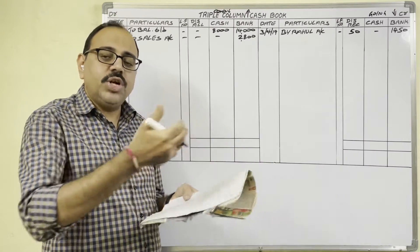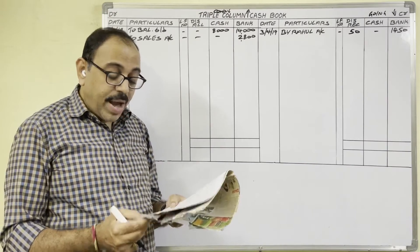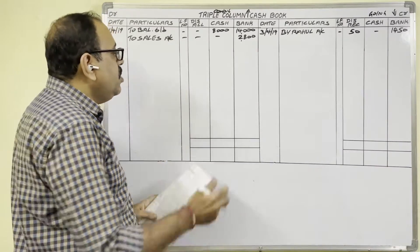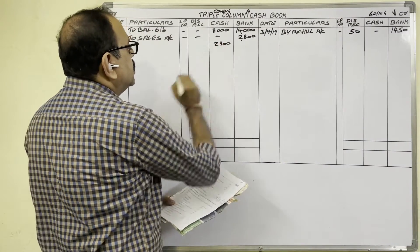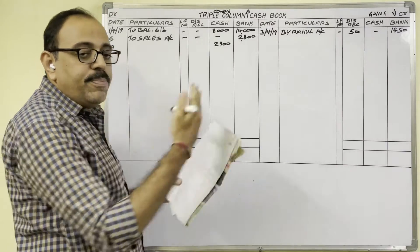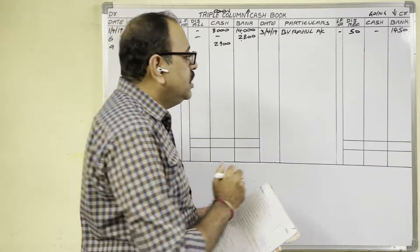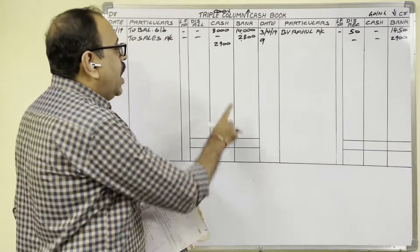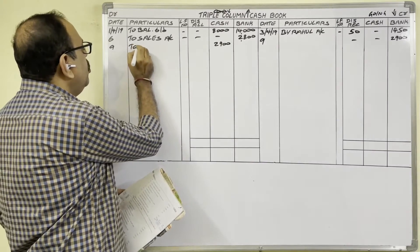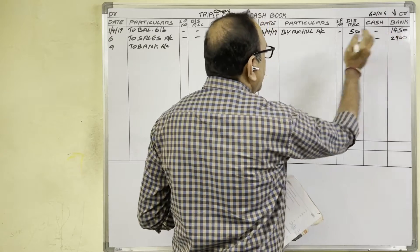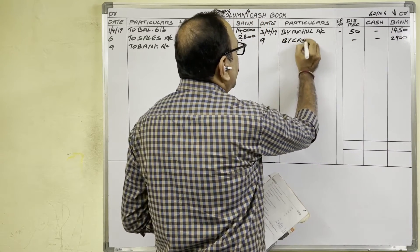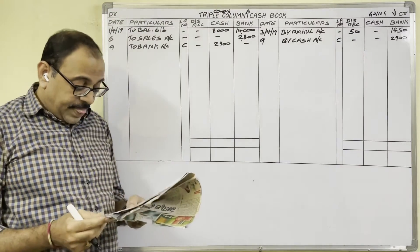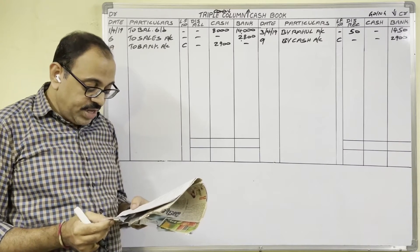9th April: Withdrawn cash from bank — 2,900 rupees. This is a contra entry. Cash deposited into bank and cash withdrawn from bank are both contra entries. The firm withdrew cash from bank for office use; cash is coming into the firm, so on the debit side cash column we write 2,900 rupees for date 9th. From the bank we withdrew money so bank balance decreases — credit side bank column. In the particulars column we write 'To Bank Account'; in the bank column entry we write 'By Cash Account'. To indicate it is a contra entry, write the letter 'C' in the LF column.